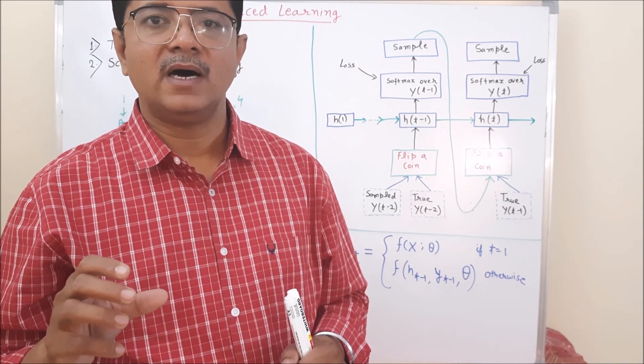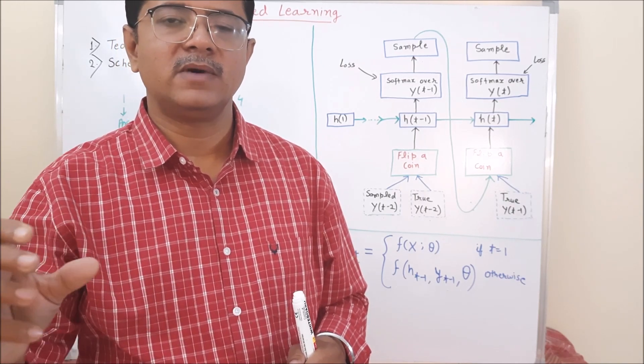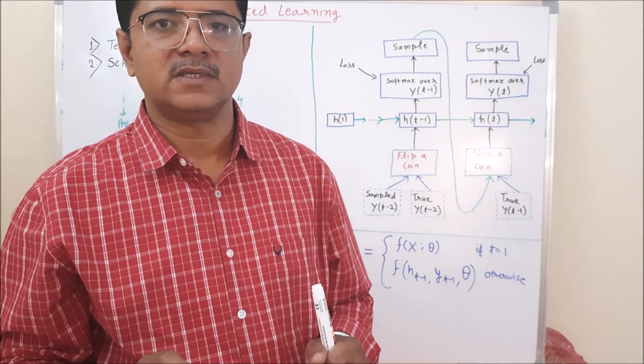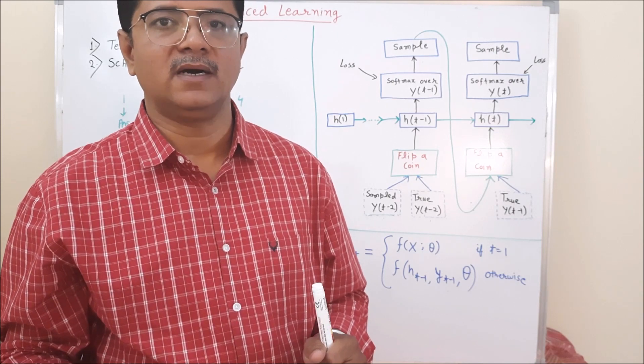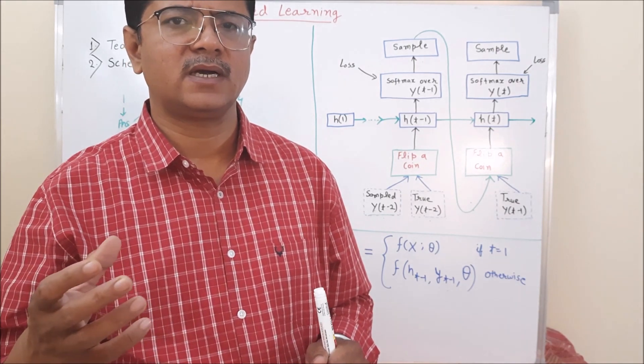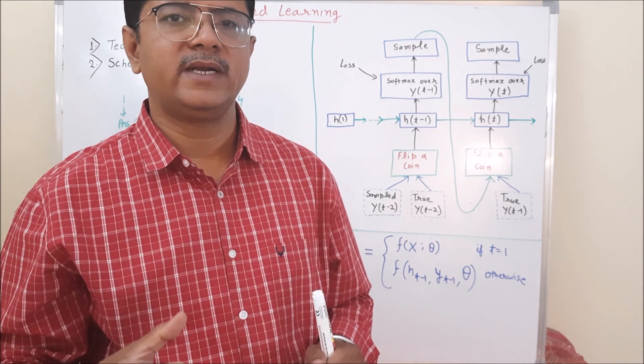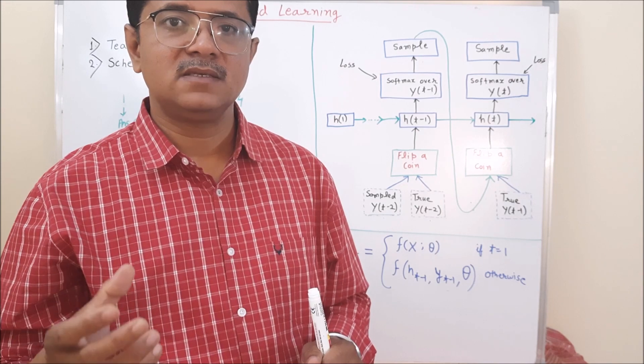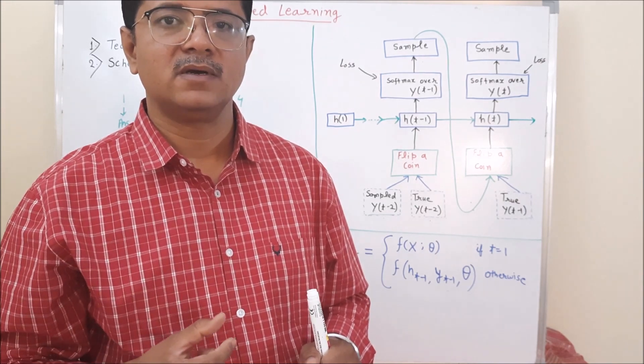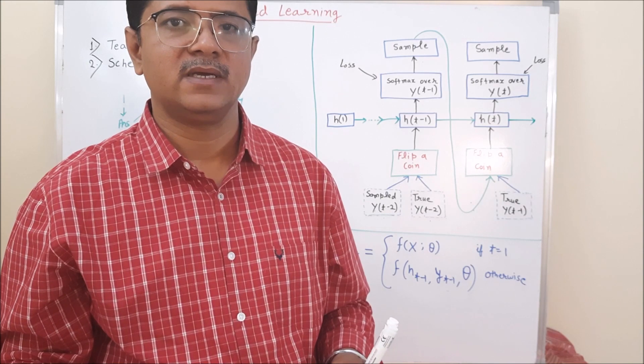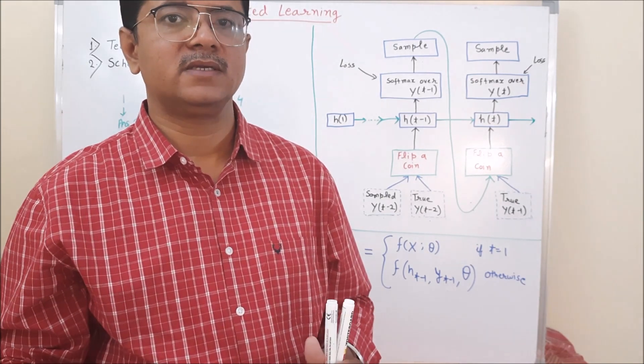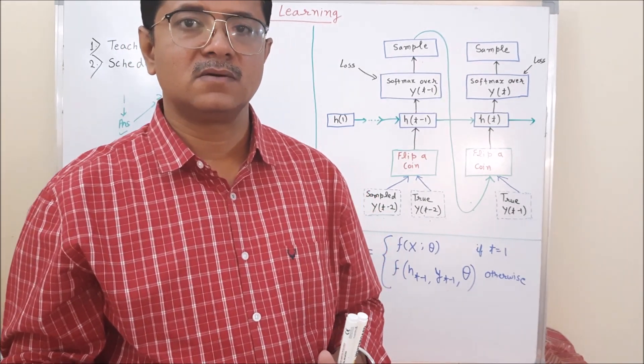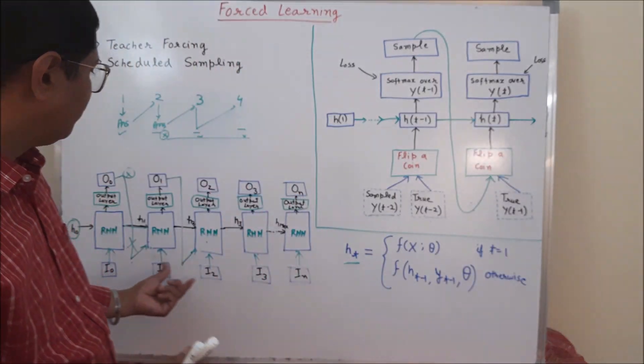Suppose you are training a system to summarize something. Till training, you can apply the teacher forcing because you have a ground truth with your data. But in test, suppose you consider the test case. Do you have a ground truth? In test case, we generally take the input. So, we will have input document, not its summary in our hand. Because we are going to calculate the summary, we cannot use the summary from anywhere else.